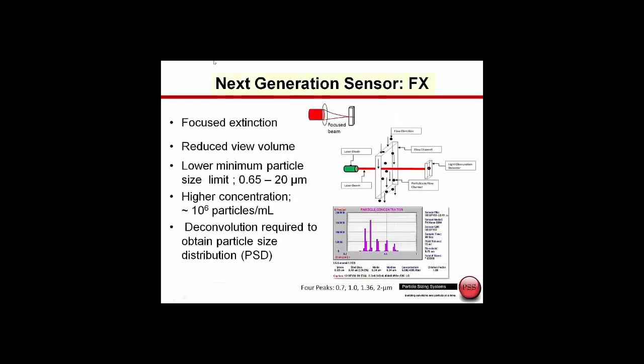As we wanted to improve the sensitivity to smaller particles, the change that was made is that we started focusing the laser beam. As we focus the laser beam to the center of the measurement zone, we now have higher laser intensity and we can measure smaller particles. The FX sensor is a focused extinction sensor. It can measure from 0.65 up to about 20 microns. Since we are now focusing at the center of the measurement zone, we actually have to collect many pulses from many particles and feed it through a deconvolution algorithm to build up the complete particle size distribution.